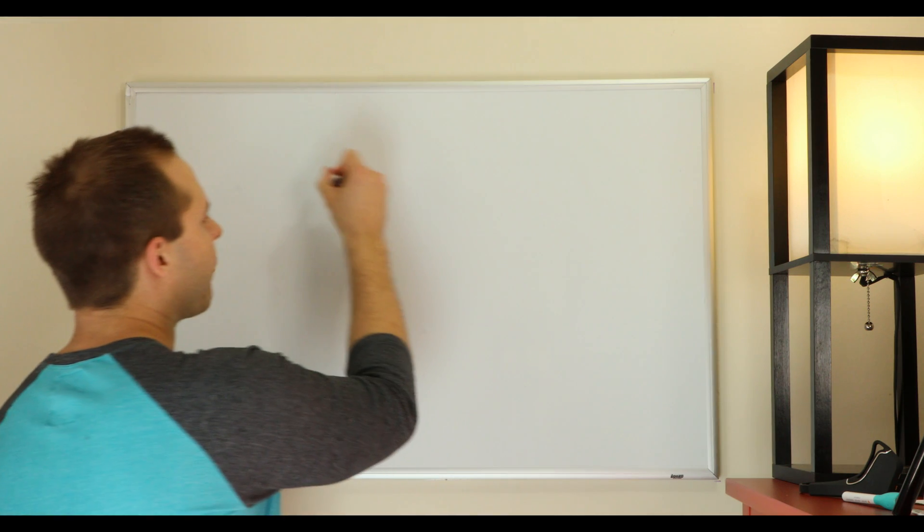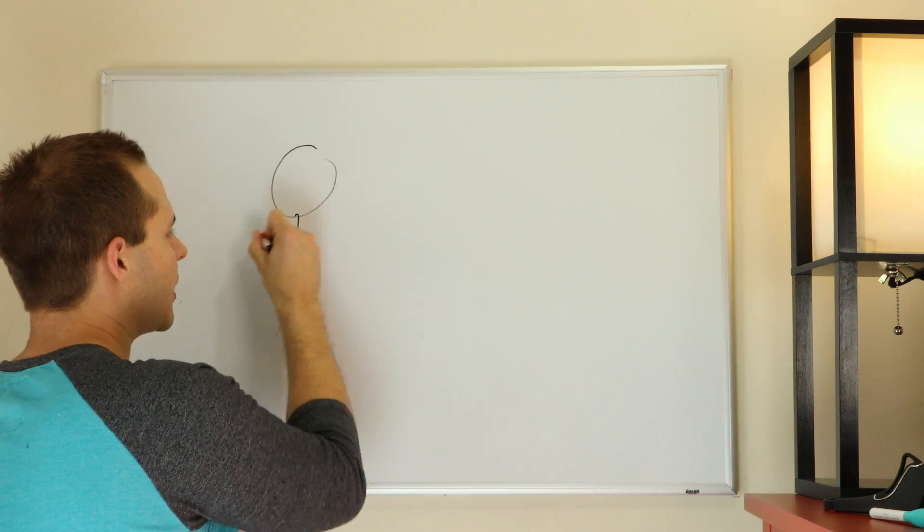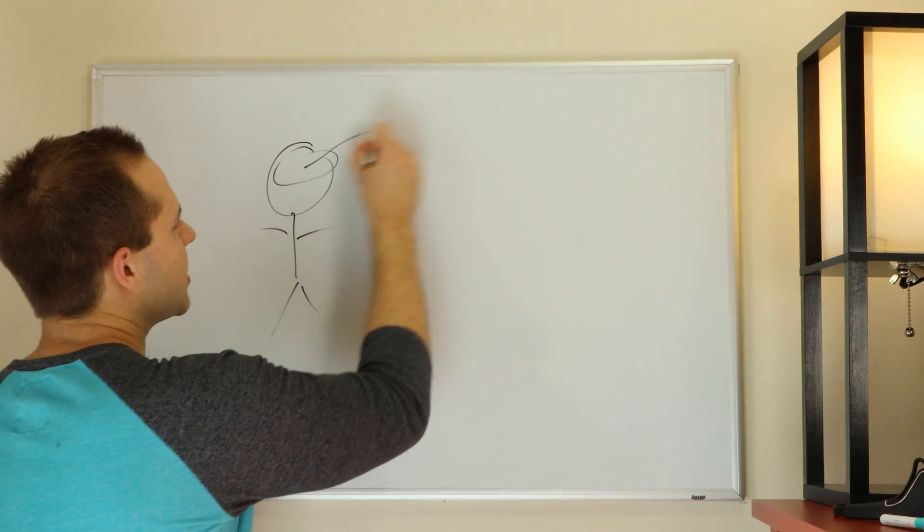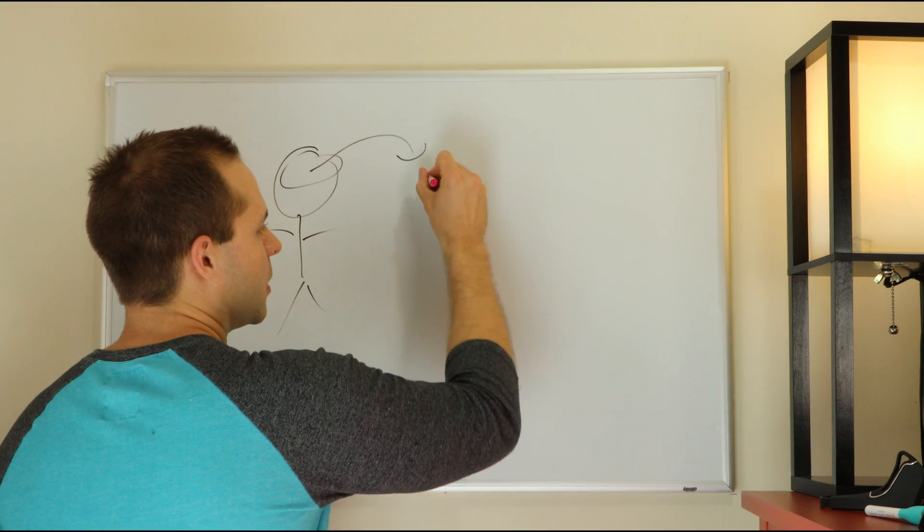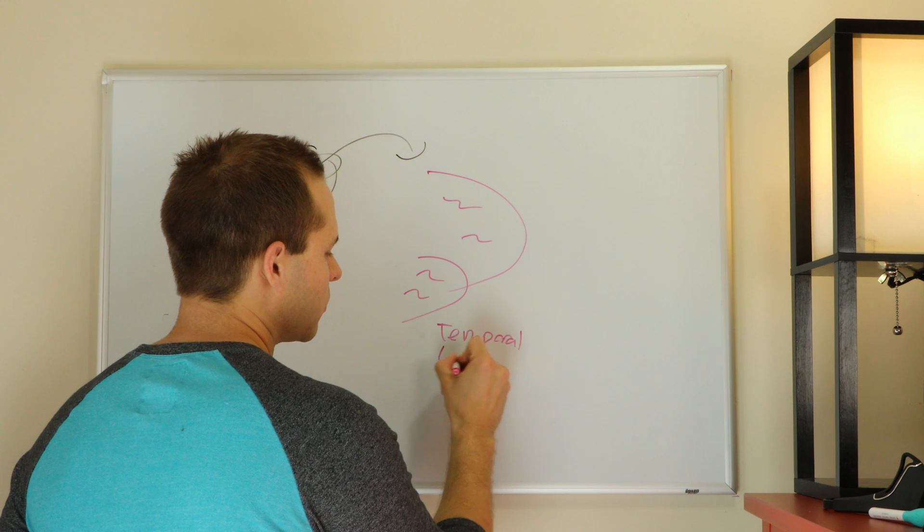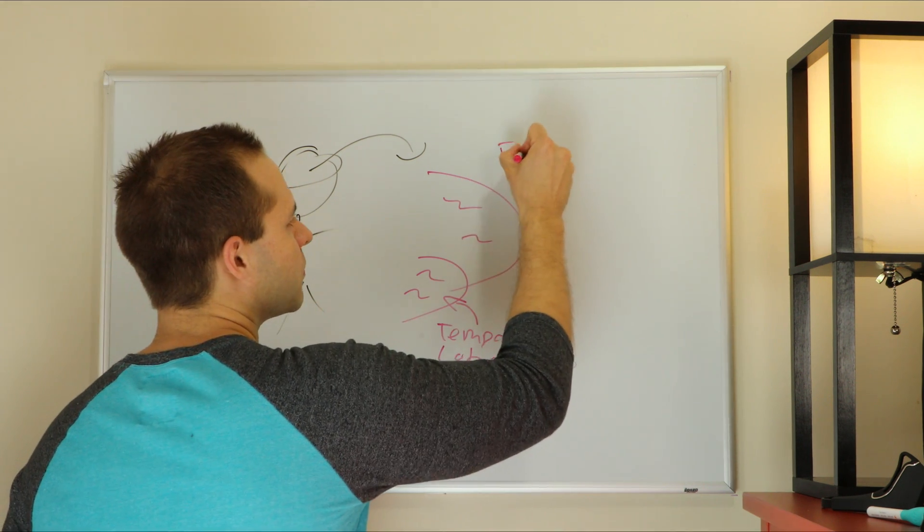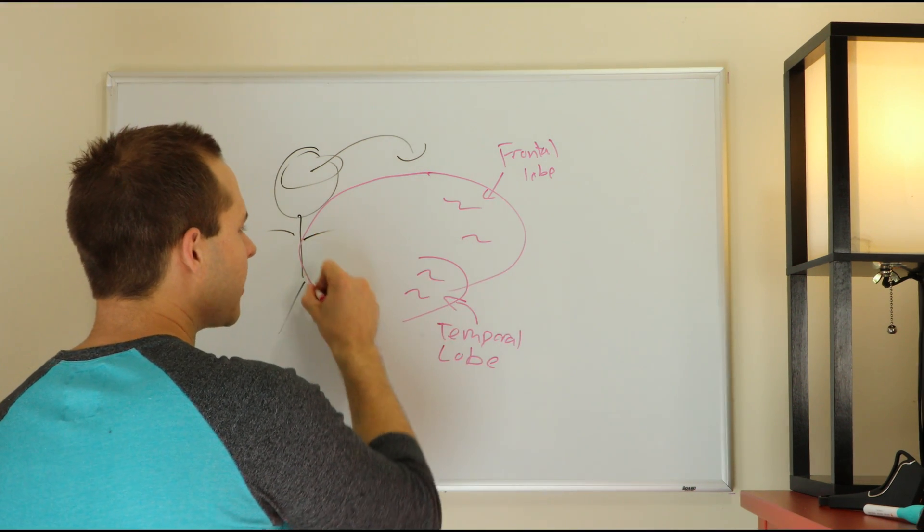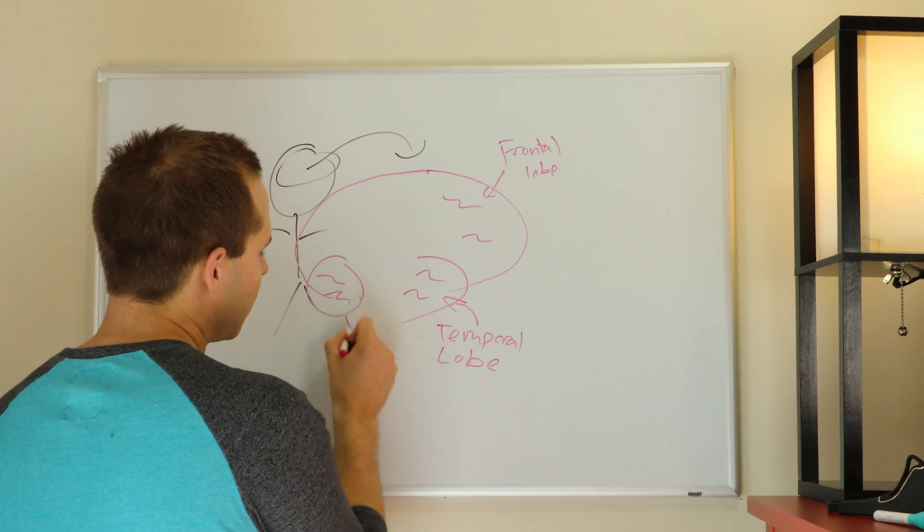So, going to the whiteboard, we have our person. And in that person is the brain. So there's my drawing of the brain. So you've got the temporal lobe right here, frontal lobe. You've got the back of the brain, the cerebellum, brain stem.